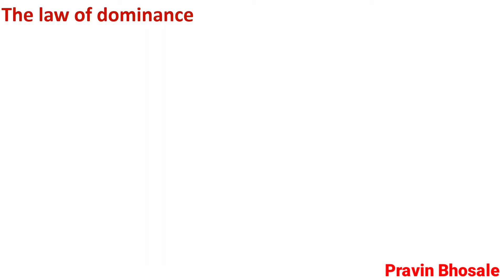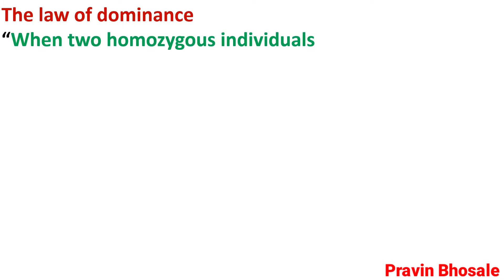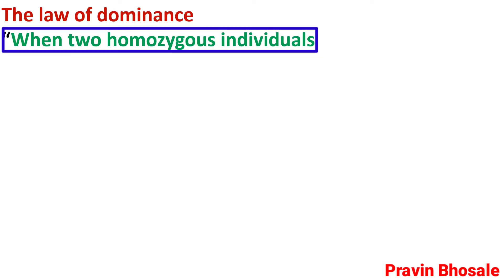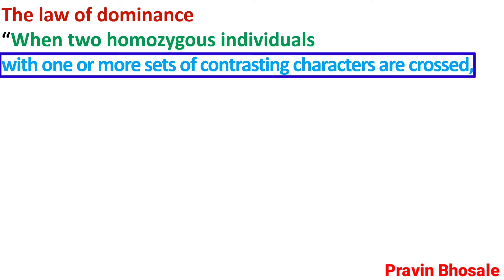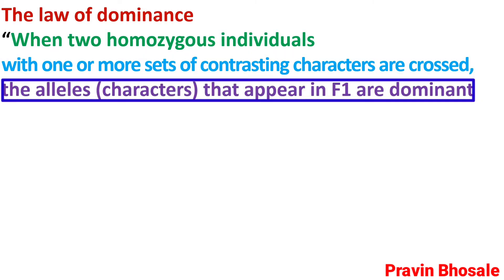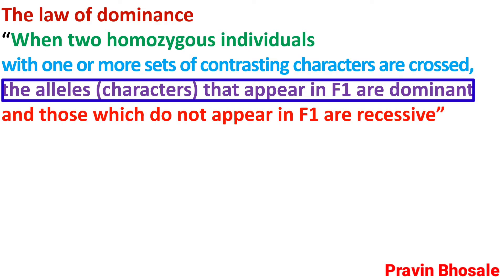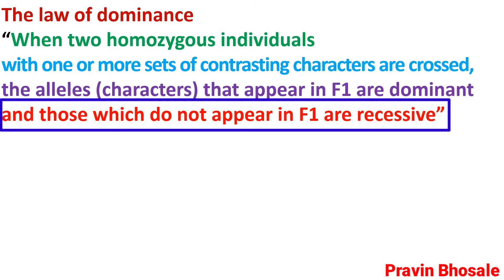Law of Dominance. When two homozygous individuals with one or more set of contrasting characters are crossed, the character that appears in F1 generation is dominant, and those which do not appear in F1 generation are recessive. Those characters which get suppressed are recessive.